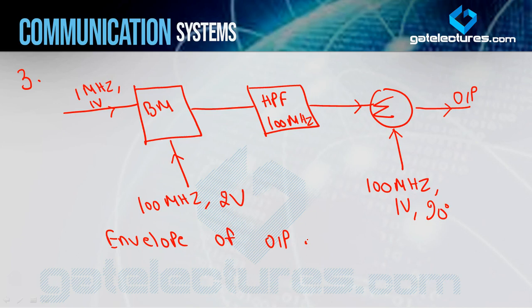An important point: in the first two signals no angle is given, but the third signal has 90 degrees phase shift. This means if the first two signals are cosines, the 90-degree phase-shifted third signal should be taken as sine, because the phase difference between cosine and sine is 90 degrees. So take all cosines except the 90-degree signal, which is sine.